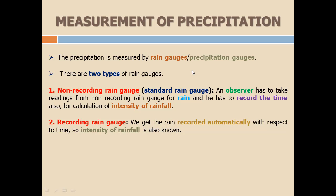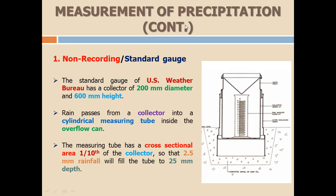Precipitation is measured by rain gauges. There are two types of rain gauges: non-recording and recording. Non-recording gauges are not automated — an observer must take readings and record the time for intensity calculations. Recording rain gauges automatically record rainfall with respect to time, so intensity of rainfall is also captured automatically.